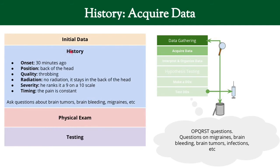We need to get information from another source: history. There are questions you ask of everybody using the mnemonic OPQRST — onset, position, quality, radiation, severity, and timing. The pain started 30 minutes ago, it's in the back of the head, it's throbbing, it doesn't radiate anywhere, it ranks at 9 on a 10 scale, and it's constant.